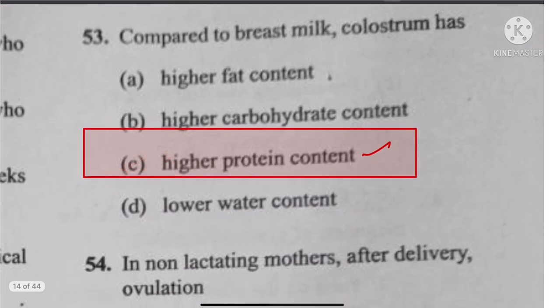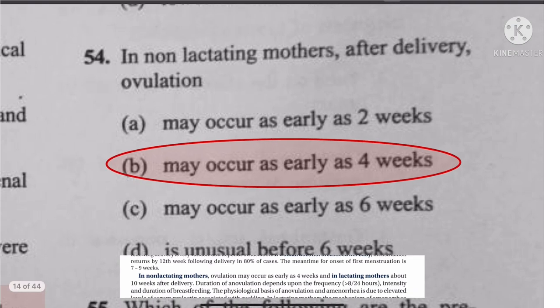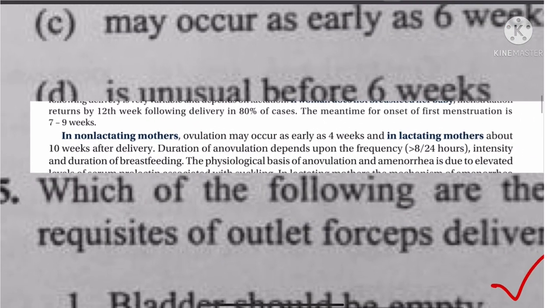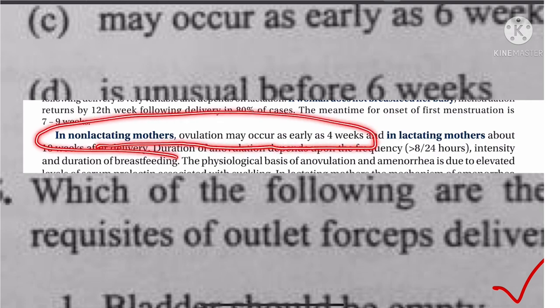Question 54: In a non-lactating mother after delivery, ovulation may occur as early as 4 weeks. The answer is 4 weeks.